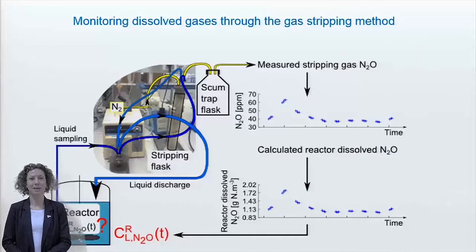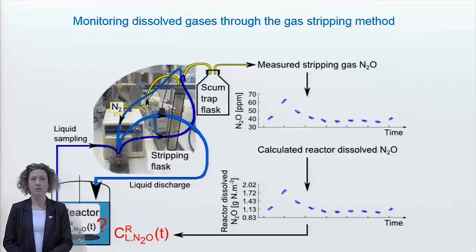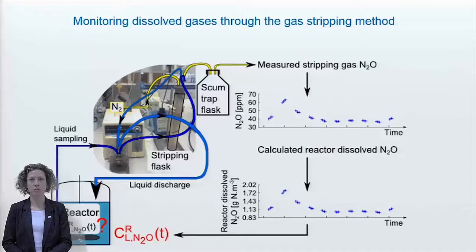Hello everybody, my name is Evelyn Volker and I'm a professor at Ghent University. In this tutorial I'm going to explain to you how to monitor the concentration of dissolved gases using the gas stripping method. More specifically, we will calculate the concentration of a gas component dissolved in liquid from the concentration of that component in the off-gas of a stripping device, which is measured with an online gas phase analyzer.